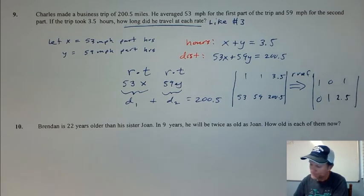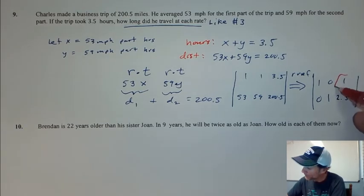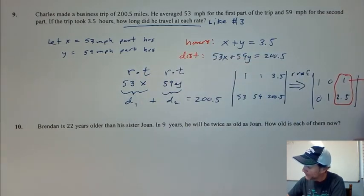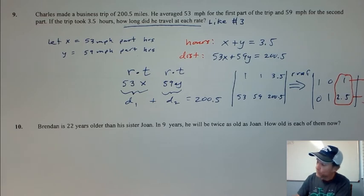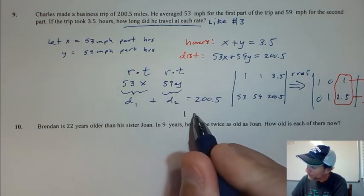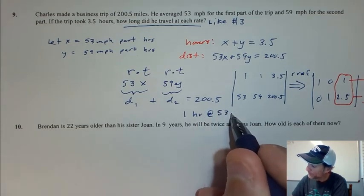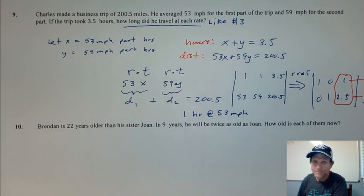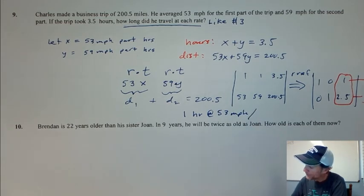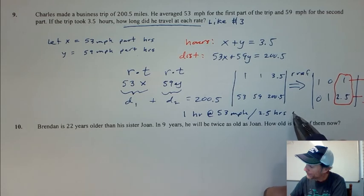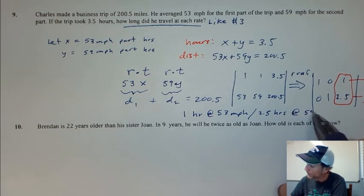So what does this mean right here? You have to go back to look at the problem. This is x, and this is y. So we have 1 hour at 53 miles per hour and 2.5 hours at 59 miles per hour.